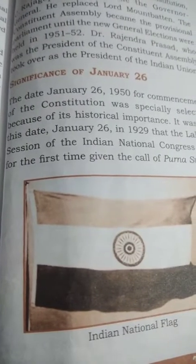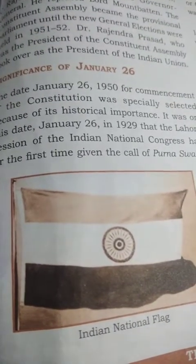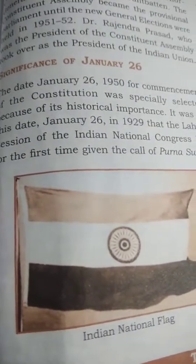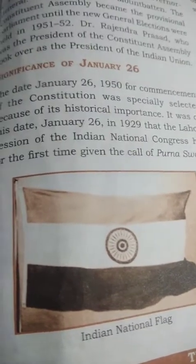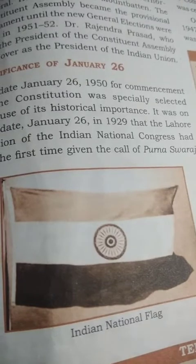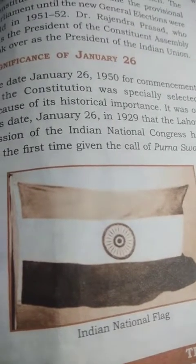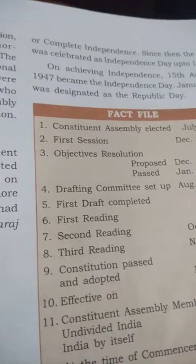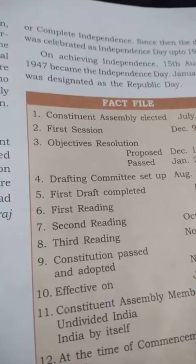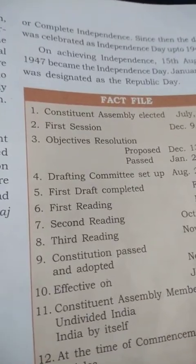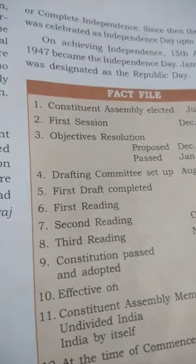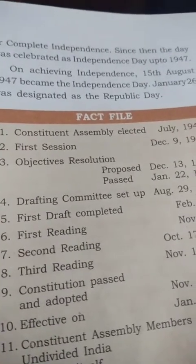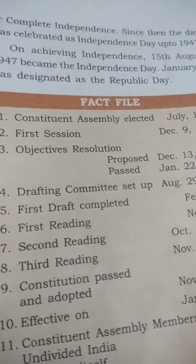Significance of January 26: Why was this date chosen to enforce the Constitution? Because of its historical importance. It was on January 26, 1929, that the Lahore session of the Indian National Congress for the first time gave the call of Purna Swaraj, or complete independence. So from 1929 to 1947, January 26 was celebrated as Independence Day. After achieving independence, August 15, 1947 became the Independence Day, and January 26 became Republic Day after 1950.